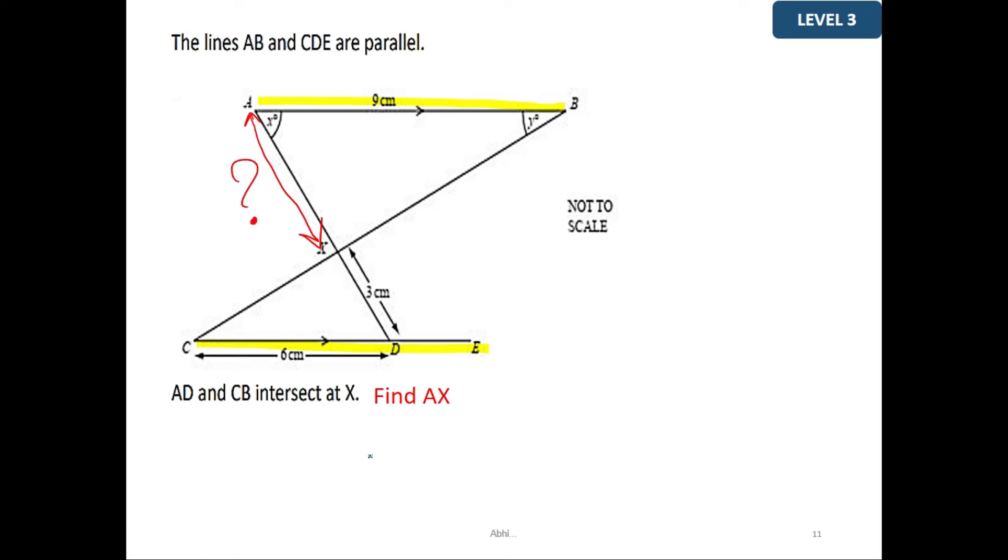Since we have two parallel lines and the triangles fall between them, considering the transversals, we have angle X here equal to the angle formed at XDC because they are alternate interior angles. Similarly, angle Y here is equal to angle BCD because they are alternate interior angles. And these are vertically opposite. So the triangles here are similar triangles.